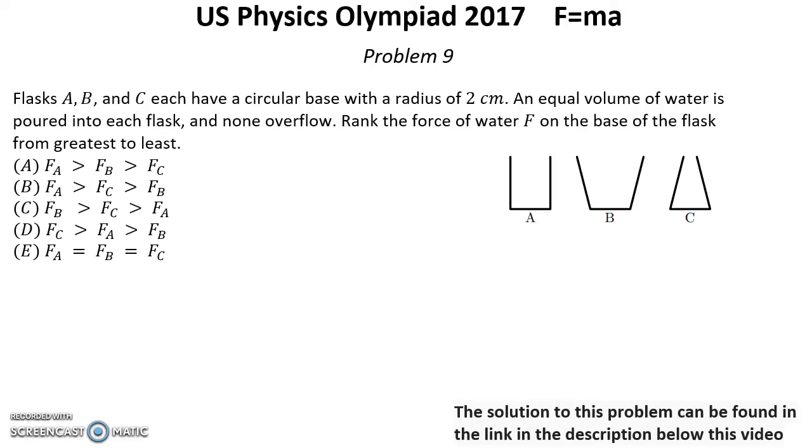Problem number nine. Flasks A, B, and C each have a circular base with a radius of two centimeters. An equal volume of water is poured into each flask and none overflow. Rank the force of water F on the base of the flask from greatest to least.